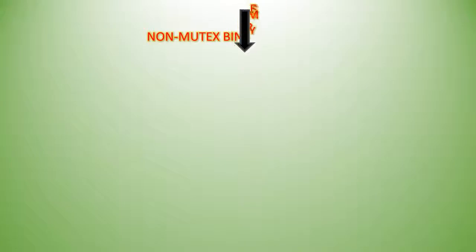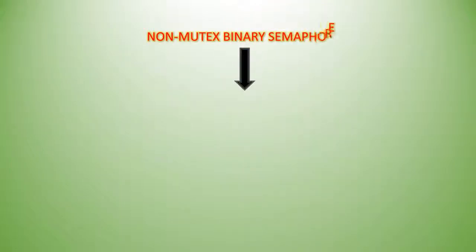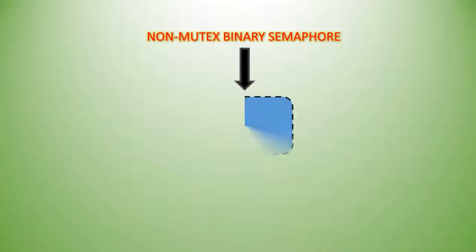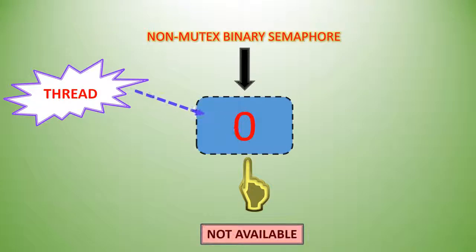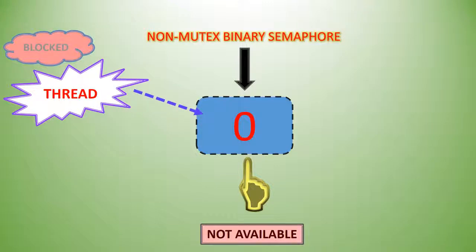Any real-time operating system provides APIs — application programming interfaces — or function calls to create a semaphore, acquire a semaphore, release a semaphore, etc. A binary semaphore has two values only: 0 and 1. Zero means the semaphore is not available, and a thread which tries to acquire this semaphore gets into a blocked state or waiting state.